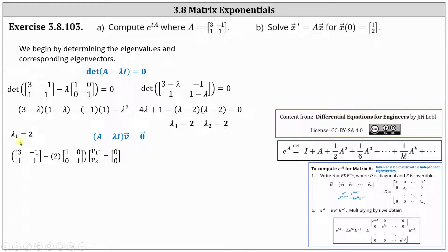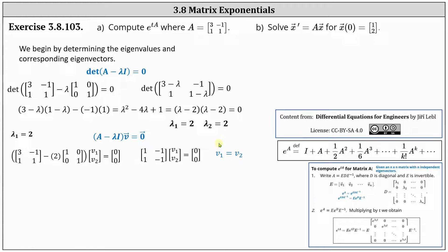In our case, here's the setup for lambda equals two. Next we simplify inside the parentheses. Notice A minus two times the identity matrix gives us the two by two matrix with entries one, negative one, one, negative one, times vector V equals a zero vector. The two equations are the same: V one minus V two equals zero, or V one equals V two. So if we let V two equal one, V one is also one, giving us the eigenvector V one equals the vector one, one.